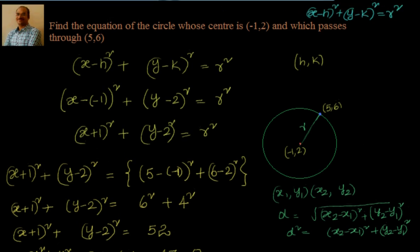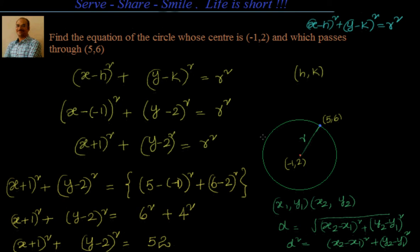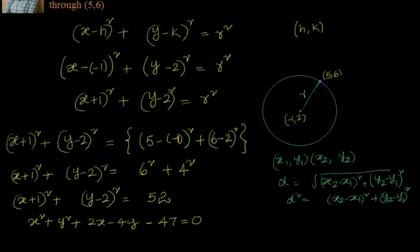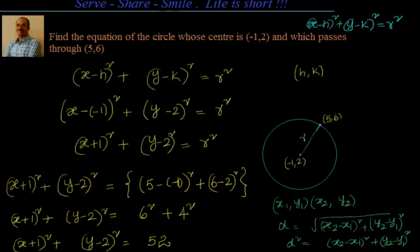Let me repeat how we have done this problem. We have been given directly what is h and what is k, and we have been given values of h and also r, so we directly substitute in the formula x minus h whole square plus y minus k whole square equal to r square. In this example, we haven't been given directly the radius, but the circle center is given and it passes through a point 5 comma 6. By the definition of radius, radius is the constant distance between center and any point on the circle. So the distance between them can be found using the distance formula, and applying that formula we obtain the equation of the circle. Let us do one more example.